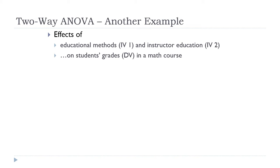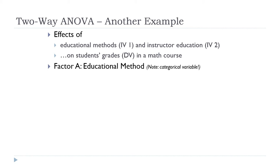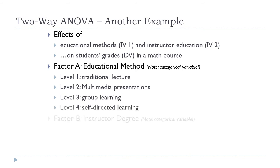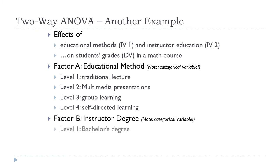I'm being a little loose with 'independent variable' — I should probably say predictor and response, but the slides are already made. Factor A is the educational method used, which is a categorical variable. Level 1 is traditional lecture, level 2 multimedia presentations, level 3 group learning, and level 4 self-directed learning. Factor B is the instructor degree: level 1 is bachelor's and level 2 is master's.